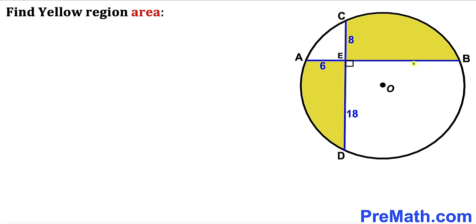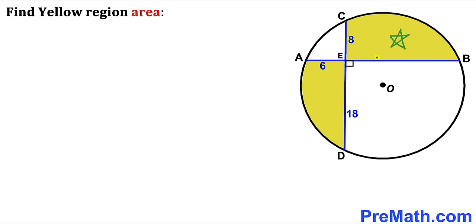Welcome to PreMath. In this video, we have these two chords AC and BD that intersect each other at point E in a circle. As you can see in this diagram, segment AE is 6 units, segment CE is 8, and segment ED is 18 units. Our task is to calculate the area of this yellow shaded region — this area and this area combined.